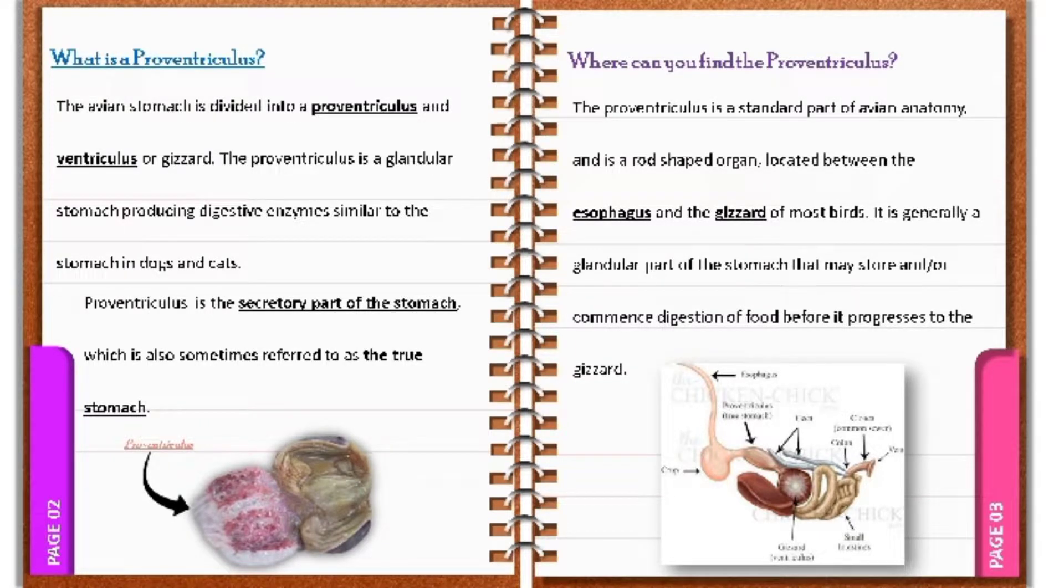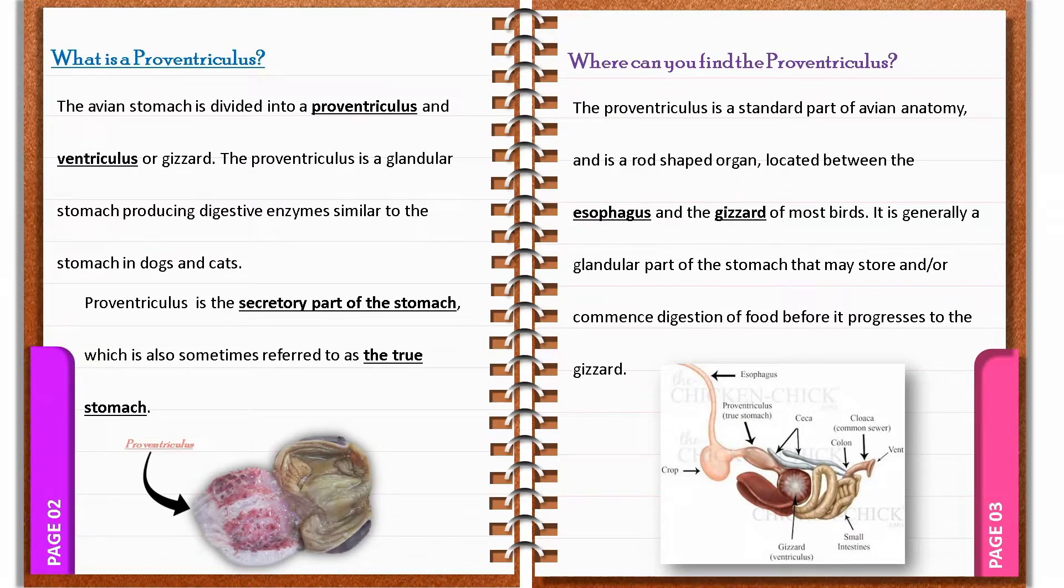For the location of the Proventriculus, it is a standard part of avian anatomy and is a rod-shaped organ located between the esophagus and the gizzard of most birds. It is generally a glandular part of the stomach that may store and commence digestion of food before it progresses to the gizzard.